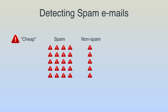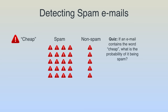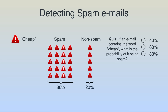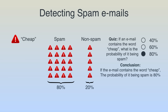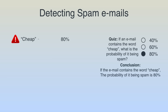Quiz: based on our data, if an email contains the word 'cheap,' what is the probability of it being spam — 40%, 60%, or 80%? Out of 25 emails with the word 'cheap,' 20 are spam and 5 are not, forming an 80/20 split. So the correct answer is 80%. From analyzing this data we conclude a rule: if an email contains the word 'cheap,' the probability of it being spam is 80%. We associate this feature with 80% probability and use it to flag future messages.